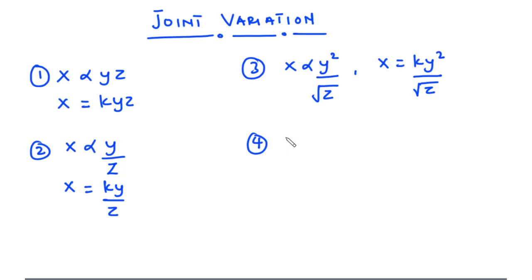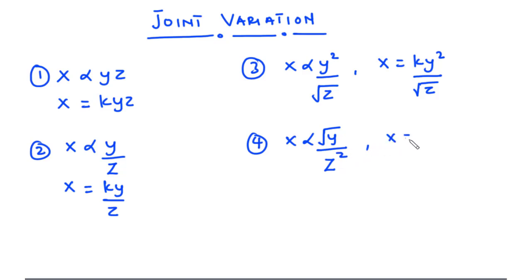If x varies directly as the square root of y and inversely as the square of z, we can represent that as x varies directly as the square root of y and inversely as the square of z. This becomes x equals k times the square root of y divided by z squared. These are some of the relations you may encounter when solving a typical joint variation question.